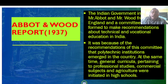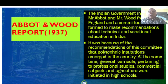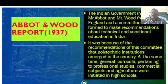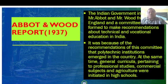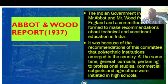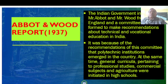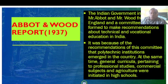Next, the Abbott-Wood Report of 1937. The Indian government invited Mr. Abbott and Mr. Wood from England, and a committee was formed to make recommendations about technical and vocational education in India — the first in India to speak about technical and vocational education. All these recommendations have the seeds for modern Indian education after independence. It was because of the recommendations of this committee that polytechnic institutions emerged in the country. General curricula pertaining to professional studies, commercial subjects, and agriculture were also initiated into high schools.